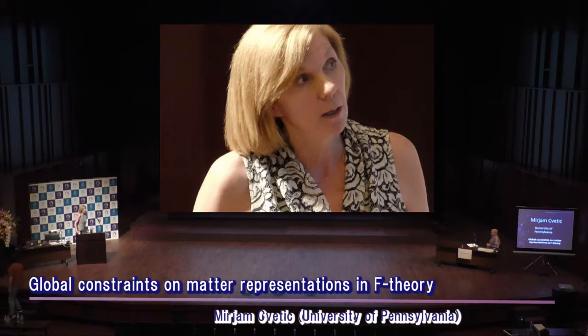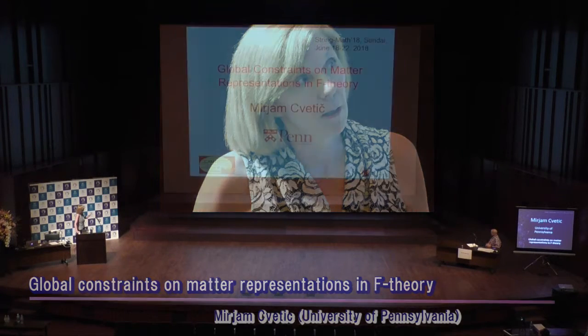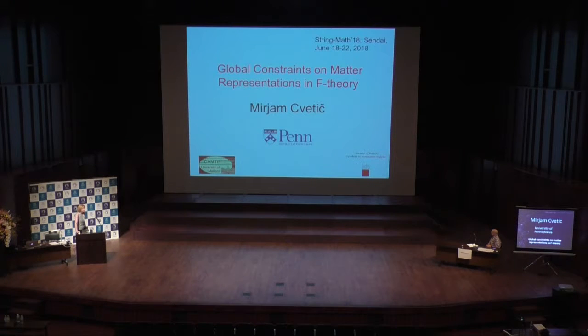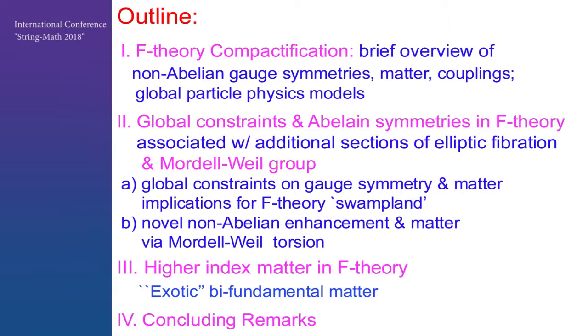This talk will be on F-theory compactification, and in particular I'm going to present some recent results on global constraints that we have obtained about the nature of non-abelian gauge symmetry and the nature of matter representations in F-theory compactification. I will start with a few key ingredients of F-theory compactification by briefly overviewing the origin of non-abelian gauge symmetry, the matter and couplings in this context, and briefly mention implications for globally consistent particle physics models.